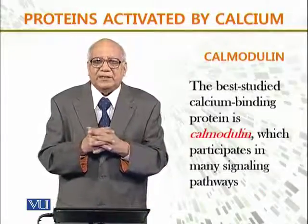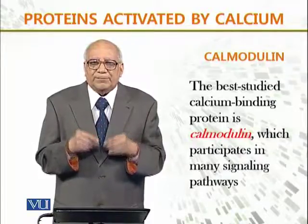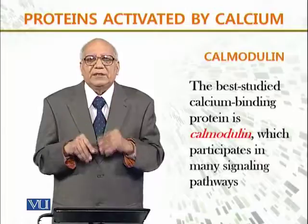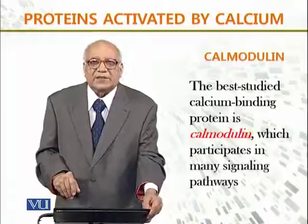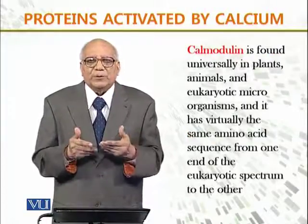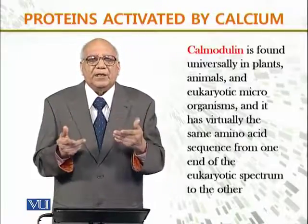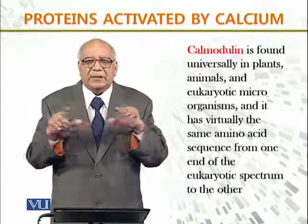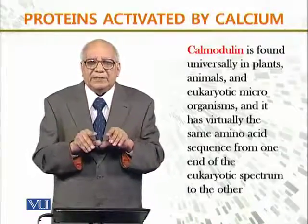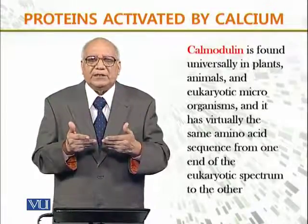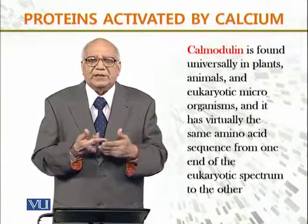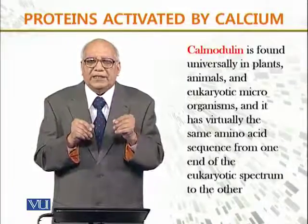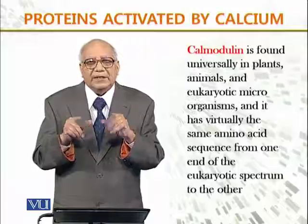One of the best studied proteins in this case is calmodulin — the best studied calcium binding protein. It participates in many signaling pathways — جتنے بھی signaling pathways ہیں اس میں یہ protein بڑھ چڑھ کر حصہ لیتی ہے. This protein is found universally in plants, animals, and eukaryotic microorganisms — ہر جگہ. And it has virtually the same amino acid sequence — چاہے آپ کسی animal سے لیں، plant سے لیں یا bacteria سے لیں — from one end of the eukaryotic spectrum to the other.